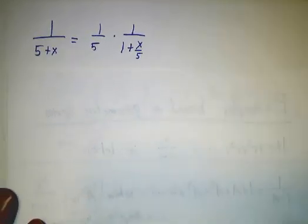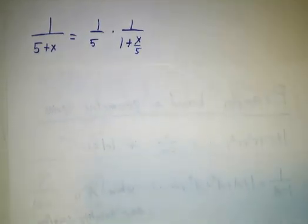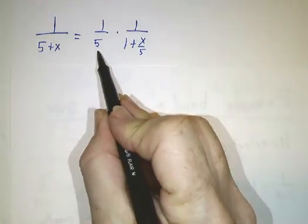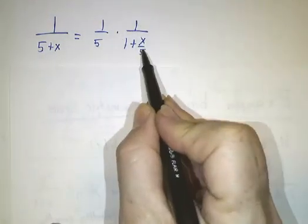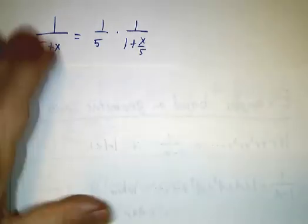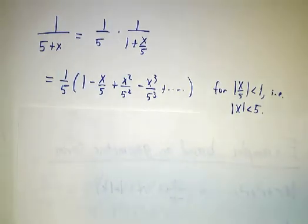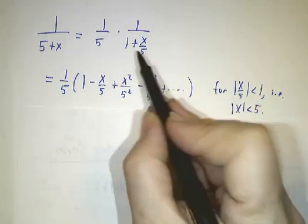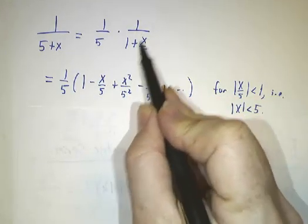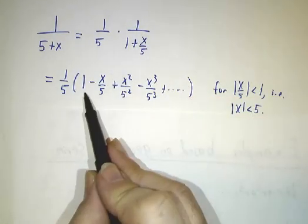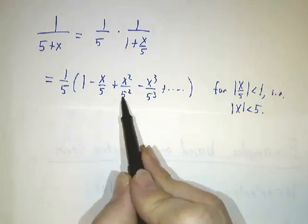You can also deal with things where the denominator is not 1. If you're interested in 1 over 5 plus x, you just factor out the 5. That's 1 fifth of 1 over 1 plus x over 5. The 1 fifth comes along for the ride, and 1 over 1 plus stuff is 1 minus stuff, plus stuff squared, minus stuff cubed, plus stuff to the fourth,